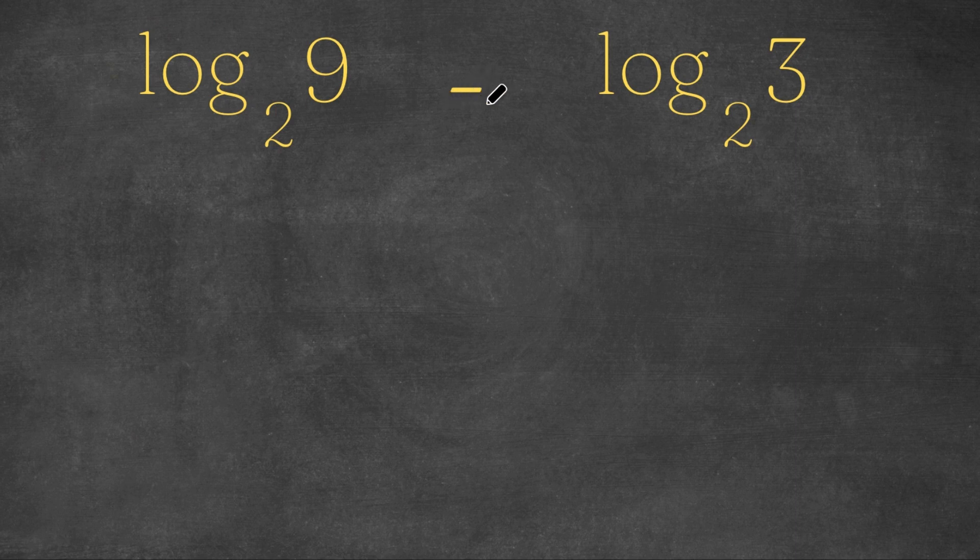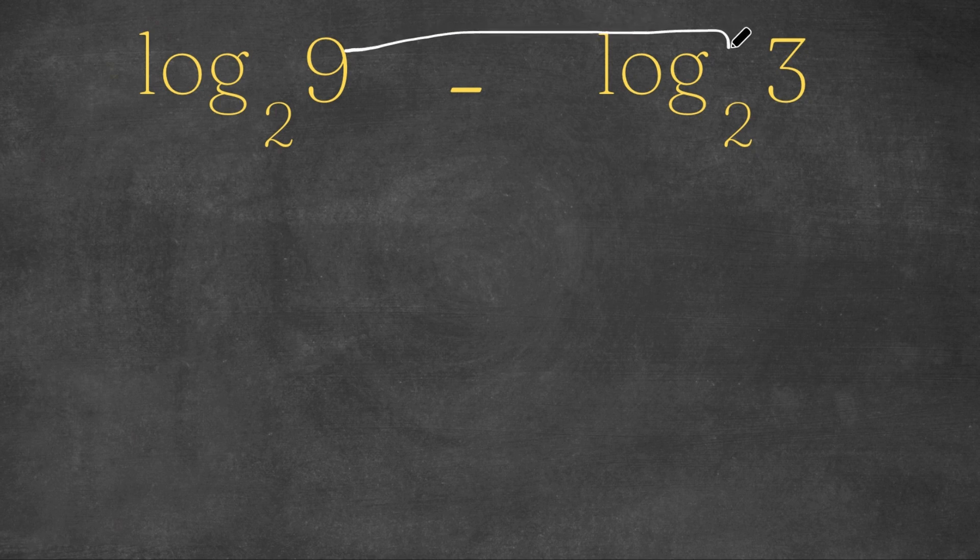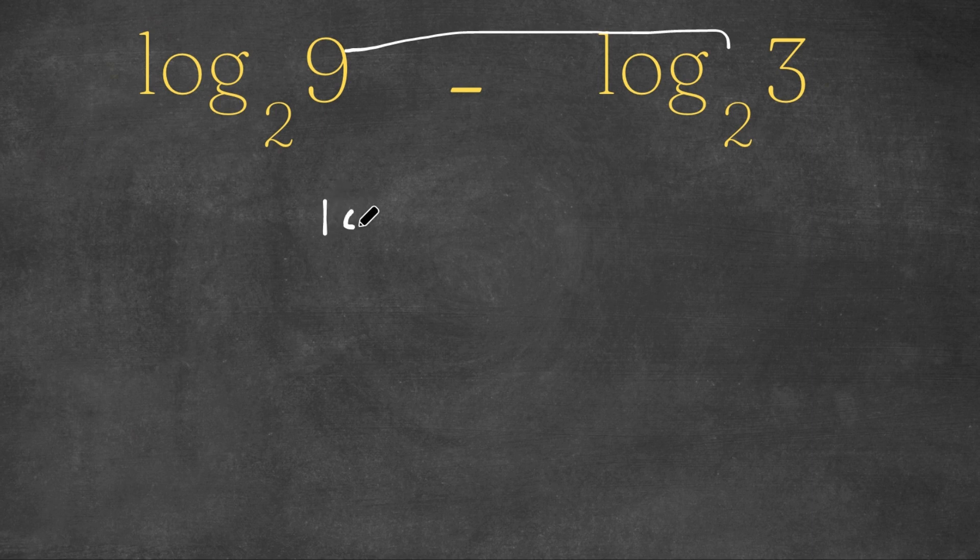Now to subtract logarithms, we do the opposite of multiplication, which is division. We're going to divide these two numbers, and the first number, which in this case is 9, is our numerator, and the second number is our denominator. So this equals log base 2—remember, we keep the base the same—9 is our numerator, over 3 is our denominator.